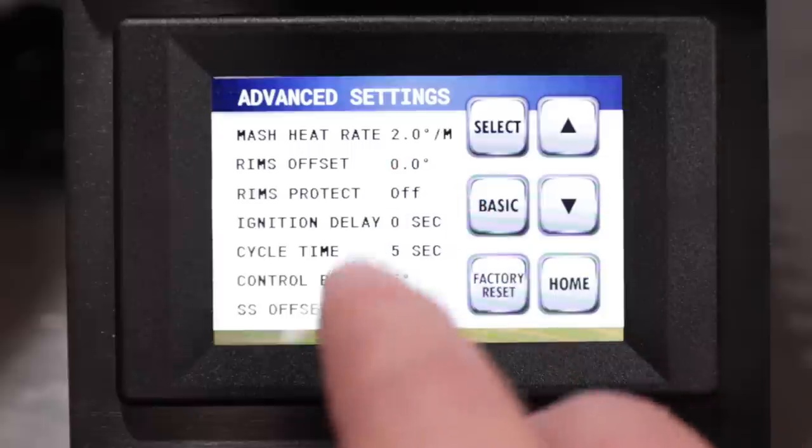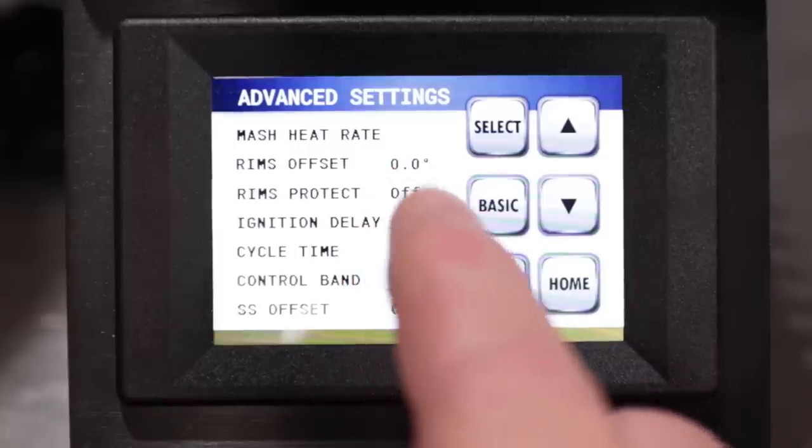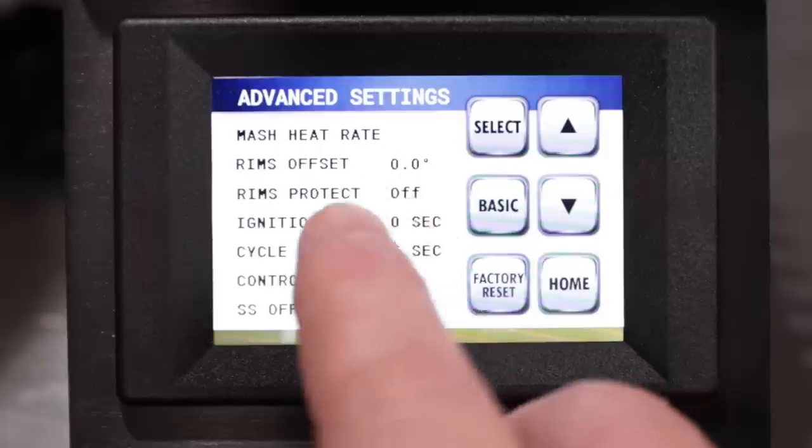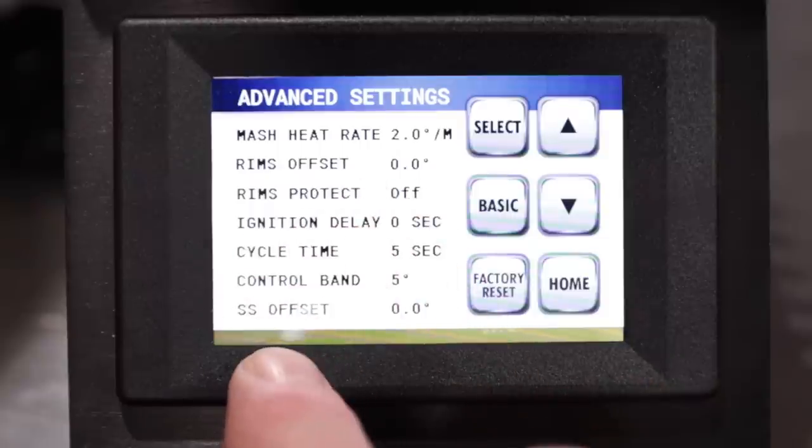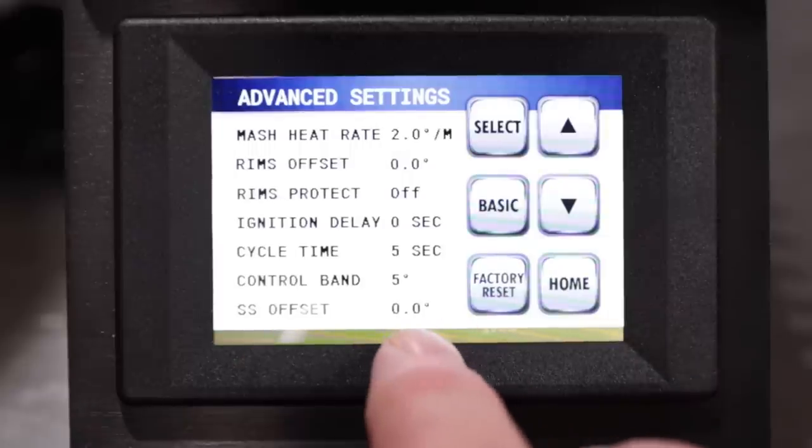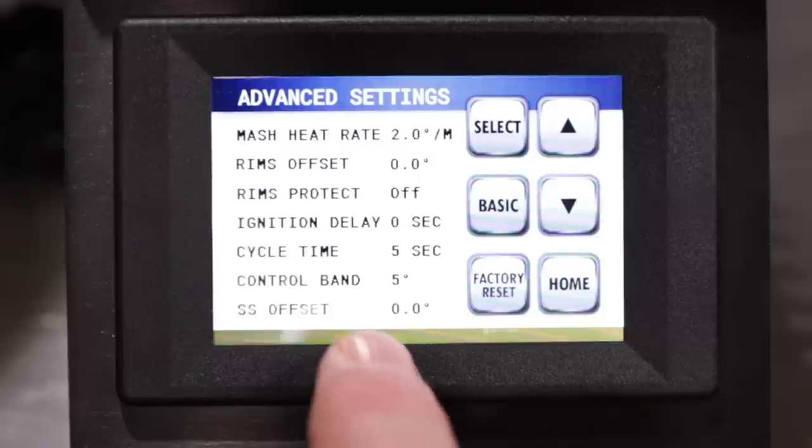The RIMS offset, this is where you would adjust for your RIMS heater or a HERMS system. The offset basically is the difference between whatever the liquid is being measured by the probe versus what the actual mash temperature is. There's some recommendations on that that we'll get into here in just a little bit.